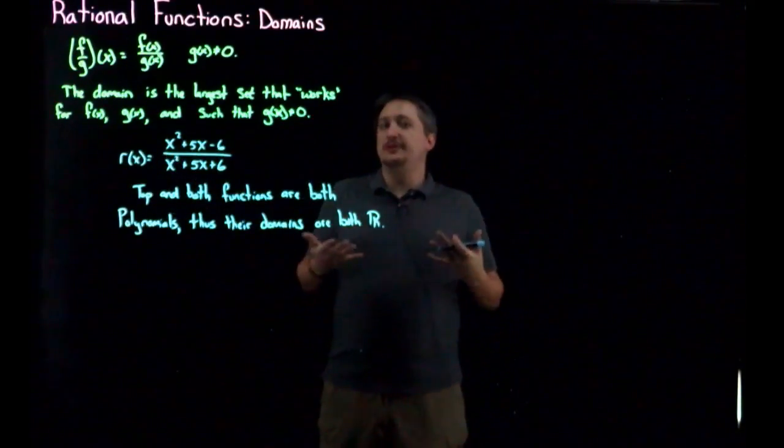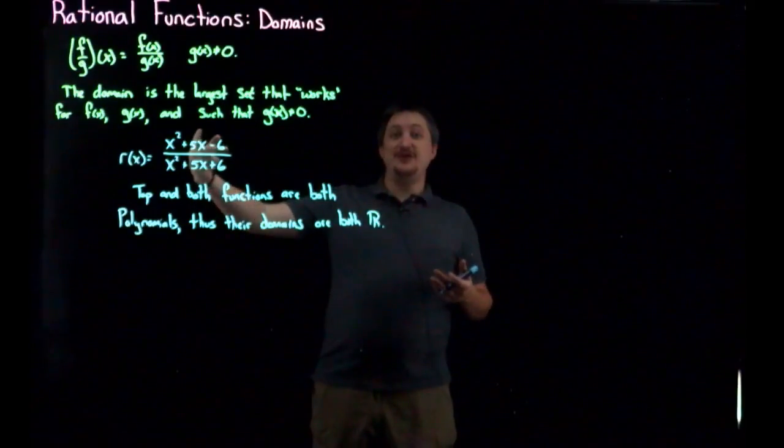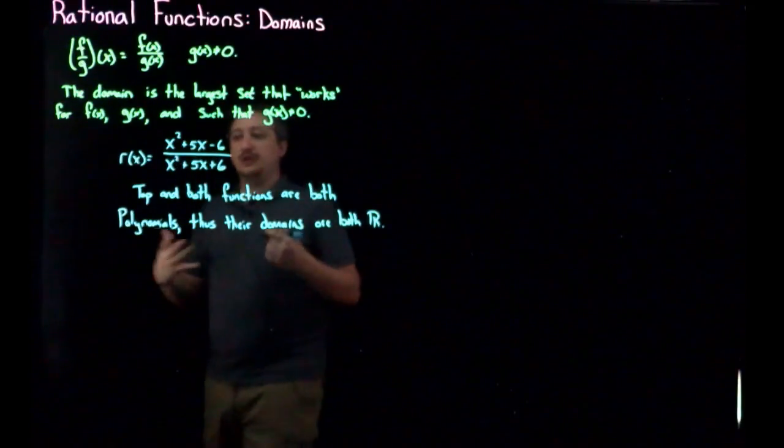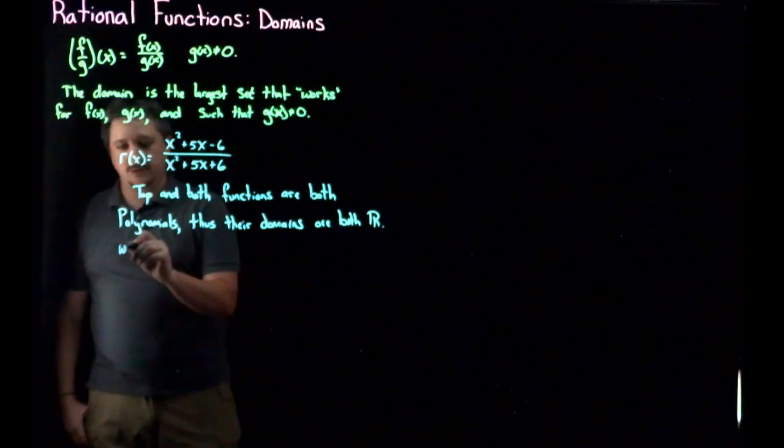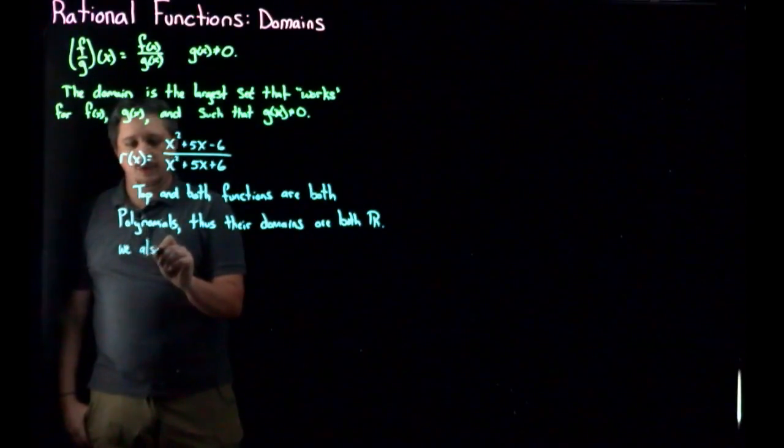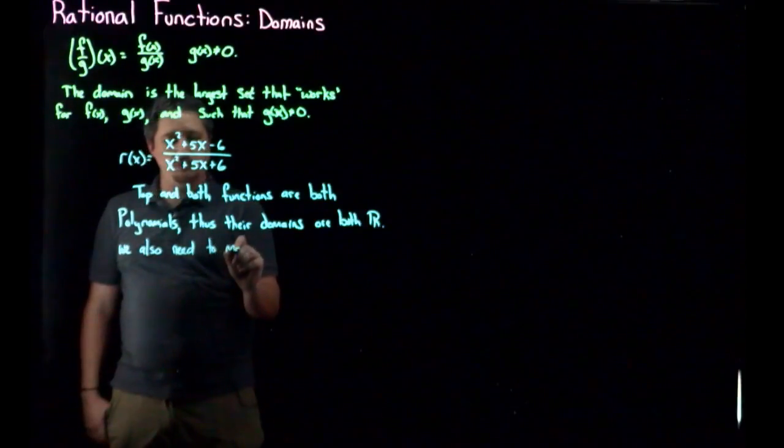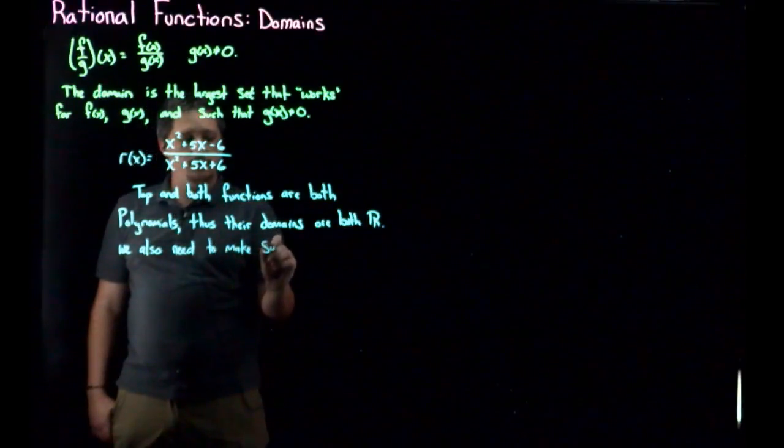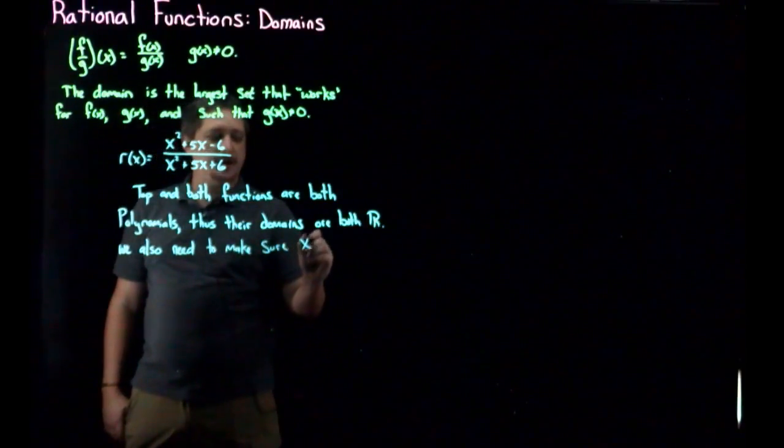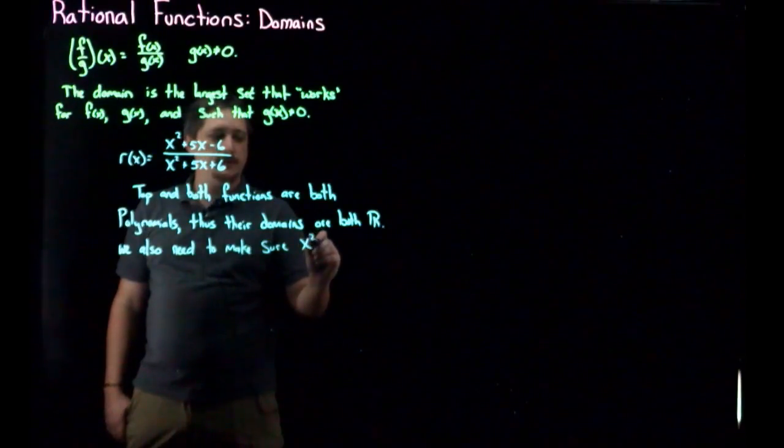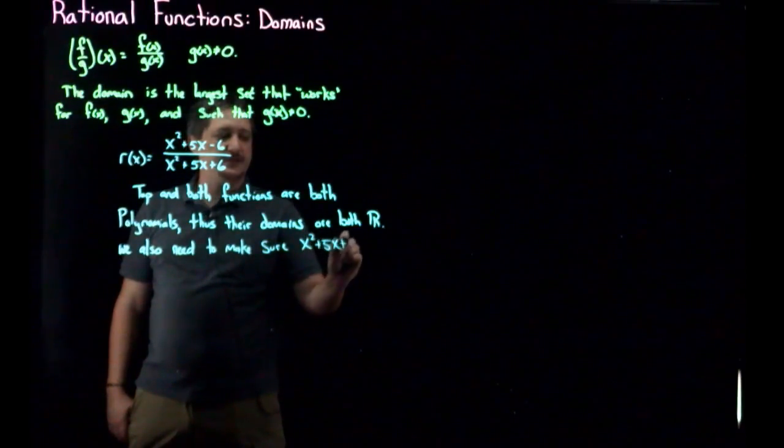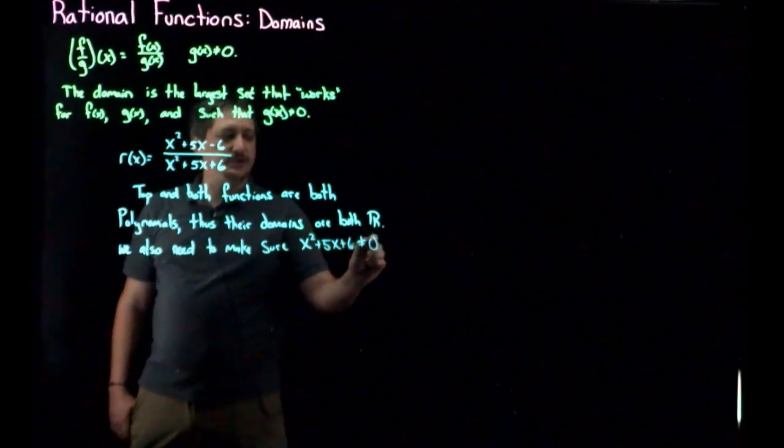But we also have to worry about then trying to take that division. Specifically, we now need to make sure that the bottom function, x squared plus 5x plus 6, does not equal zero.